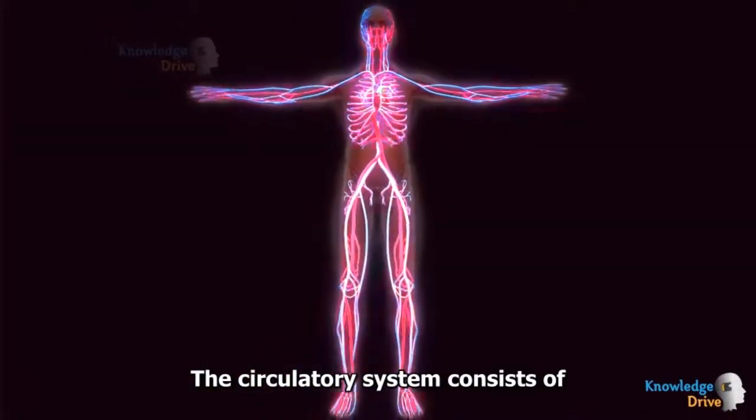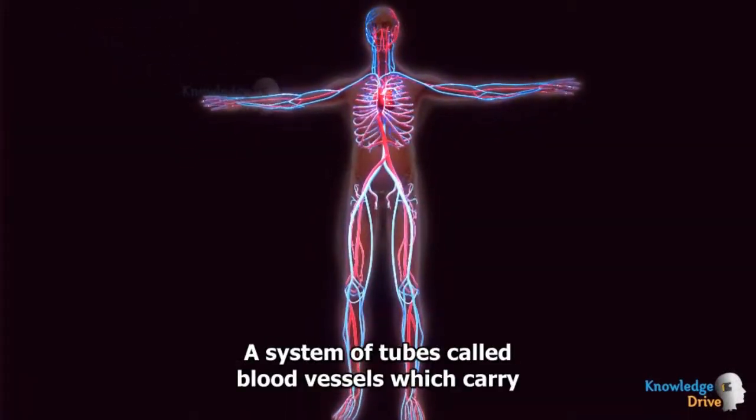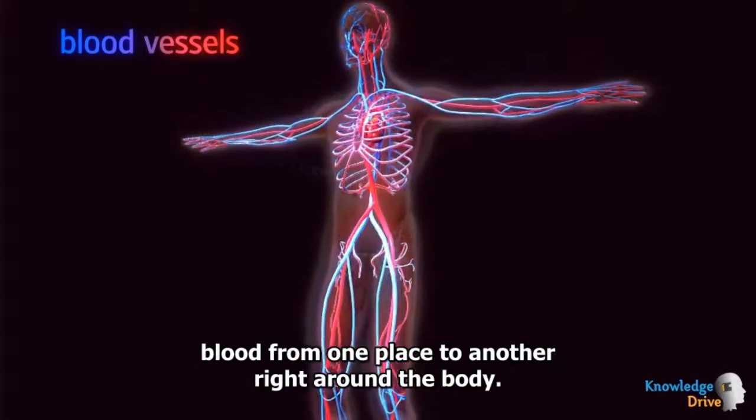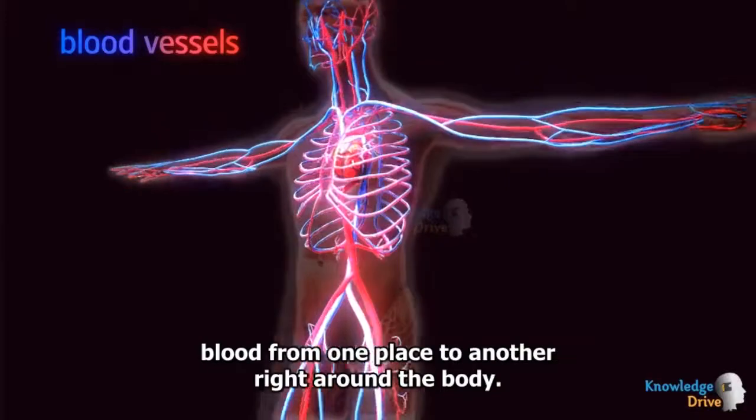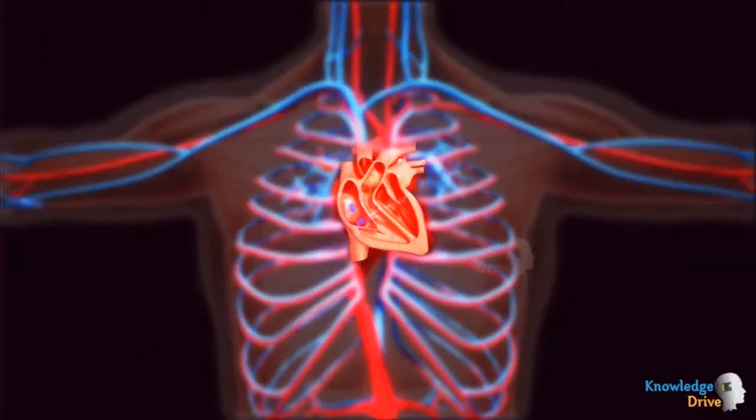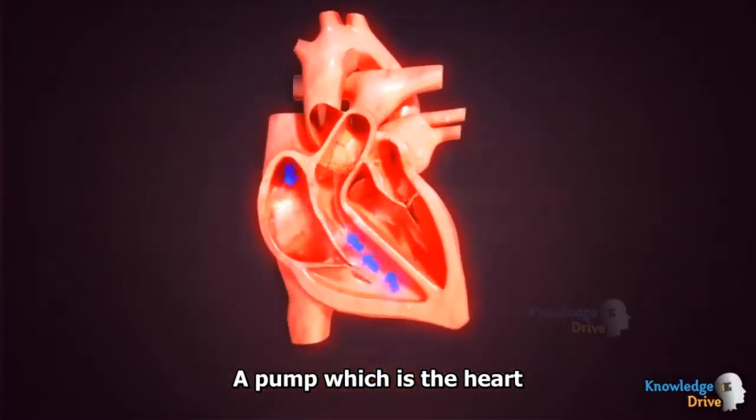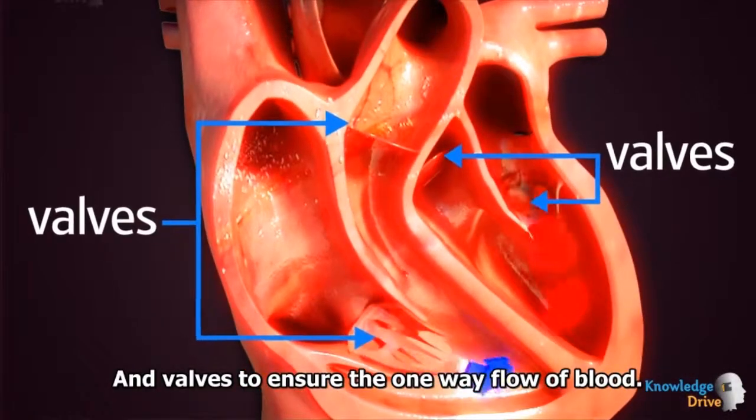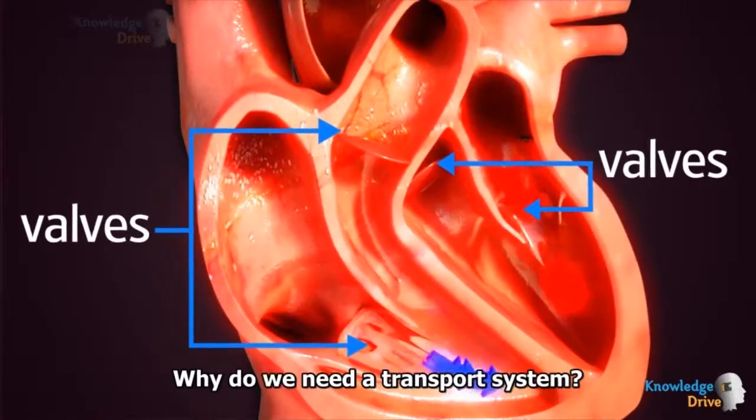The circulatory system consists of a system of tubes called blood vessels which carry blood from one place to another right around the body, a pump which is the heart, and valves to ensure the one-way flow of blood.